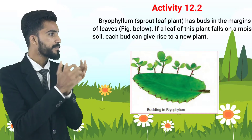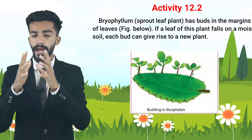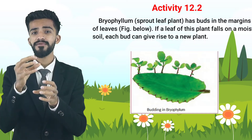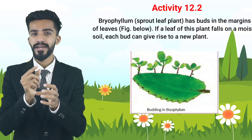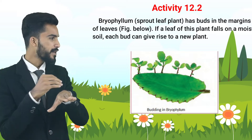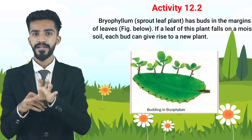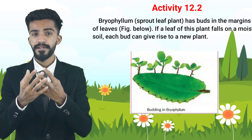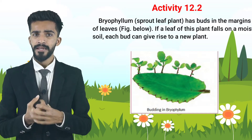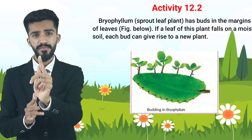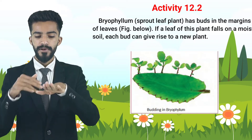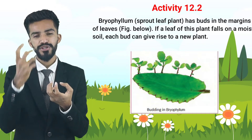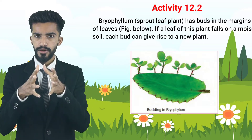If a leaf of the Bryophyllum plant falls on moist soil, each bud can give rise to a new plant. So if one leaf has five buds, when it falls on moist soil it will grow into five new plants. Each bud will grow into a new plant when it gets regular moisture.